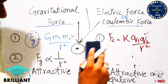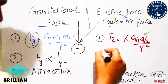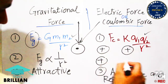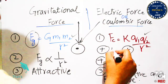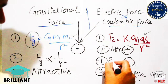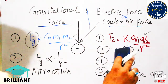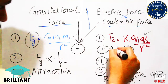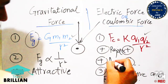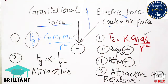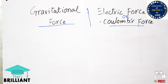In the case of electric force or Coulomb force, it is attractive as well as repulsive. Two charges having the same polarity — positive and positive — will repel each other. But in the case of positive and negative charges, the polarity is opposite, so these charges attract each other. This is one key difference between electric force and gravitational force.